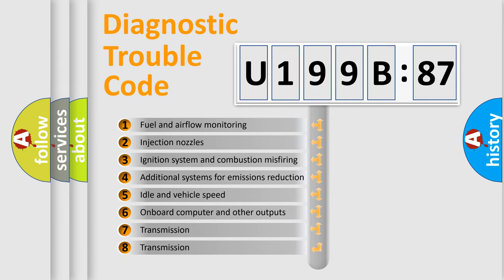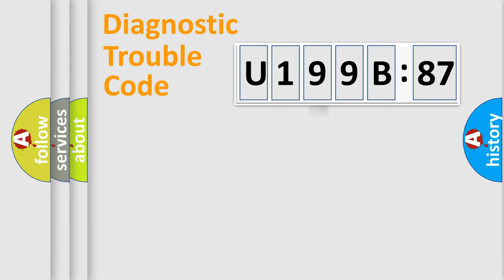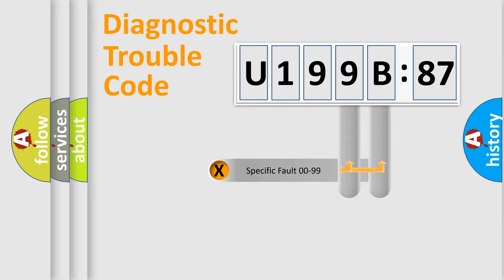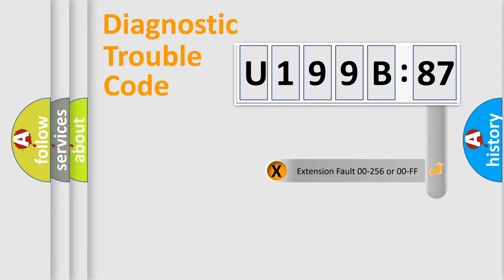The third character specifies a subset of errors. The distribution shown is valid only for the standardized DTC code. Only the last two characters define the specific fault of the group.